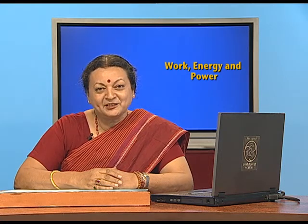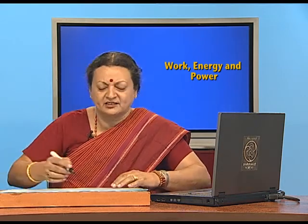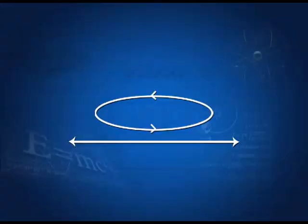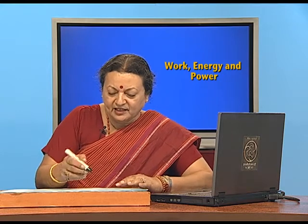So, we are going to use work energy theorem in order to describe what happens when a body moves in a vertical circle. What is really meant by a vertical circle? Let's understand that. You could be moving in a horizontal plane or you could be moving in a vertical plane. So, what is the difference? What is so special about it?